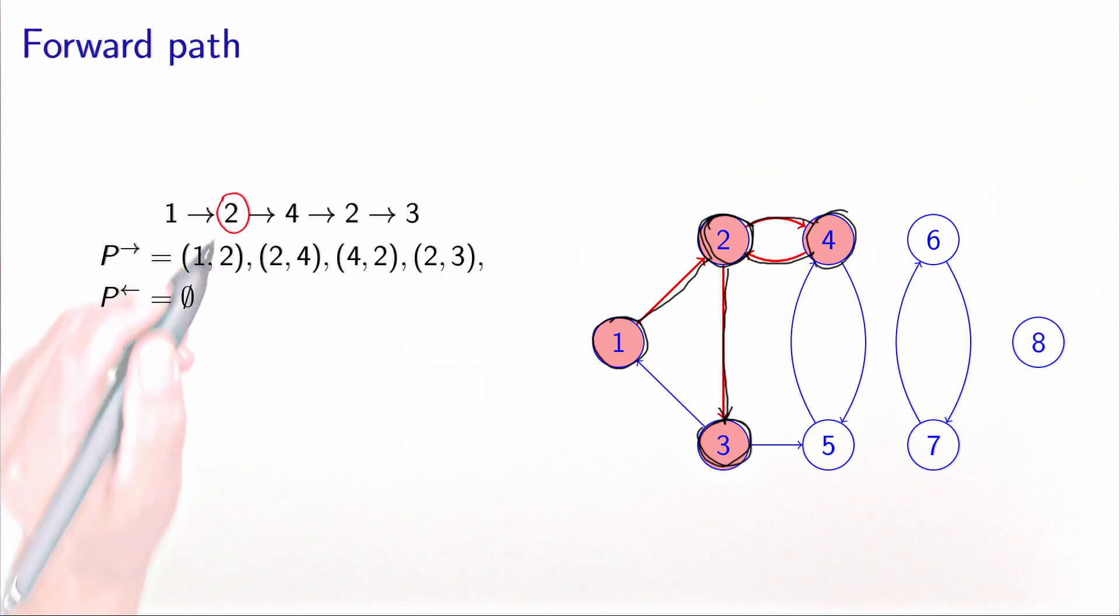As you can see, node 2 appears twice in the path. Therefore, the path is not simple. Now if we look at the arcs that we have followed, they are all forward: 1, 2, 2, 4, 4, 2, and 2, 3. There is no backward arc. So this is a forward path.